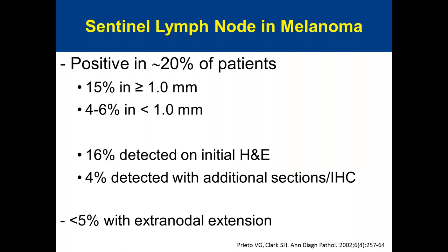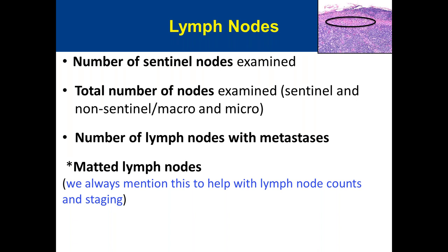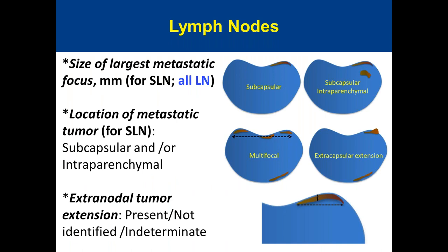For sentinel lymph node reporting, we report the total number of lymph nodes examined and the number with metastatic disease, for both sentinel and non-sentinel nodes. We note whether a positive node is a sentinel node. We measure the size of the largest metastatic deposit in two dimensions. If multiple foci are present, we measure all adjacent deposits together as they likely represent a continuous focus on deeper sections. We also report the location of metastasis — subcapsular, intraparenchymal, or both — and whether extracapsular extension is present.